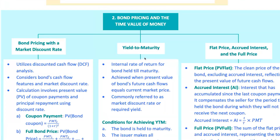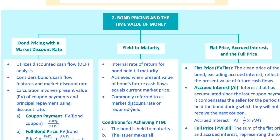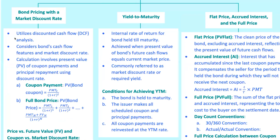Now let's talk about yield to maturity, YTM. YTM is like the IRR — internal rate of return — of a bond. It's what you'd earn if you held the bond until maturity and reinvested all the coupon payments at that same yield. YTM is the discount rate that makes the present value of all future cash flows from the bond — coupons and principal repayment — equal to the bond's current market price. It's the ultimate measure of a bond's return because it accounts for everything: the bond's price, its coupon payments, and the time value of money. Conditions for achieving YTM: the bond is held until maturity, the issuer makes all full coupon and principal payments as scheduled, and the investor reinvests all coupon payments at the same YTM rate.